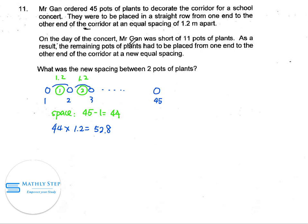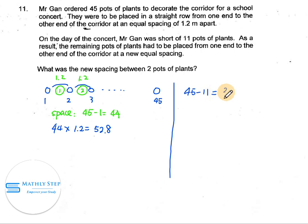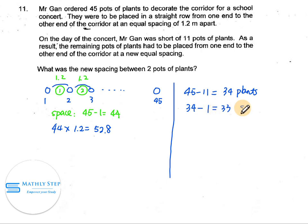However, on the day of the concert, there was a shortage of 11 pots. So on the day of the concert, there are only 45 minus 11, which is 34 plants. These 34 pots of plants — how many spaces can they create? It is 34 minus 1, which gives 33 spacings.